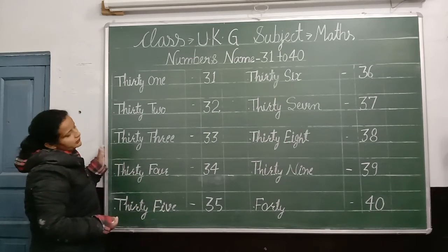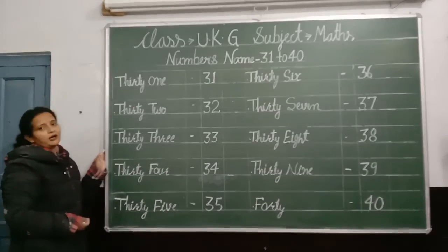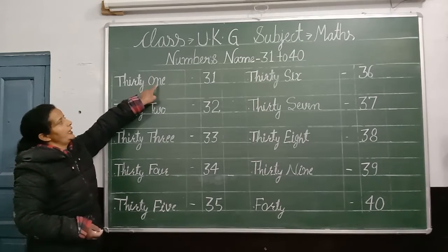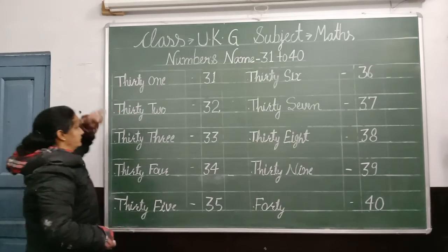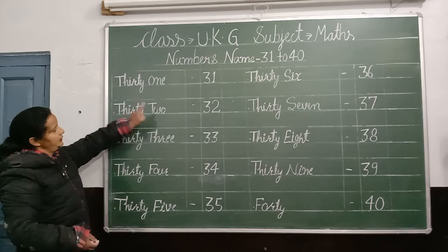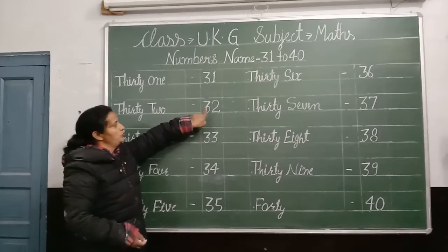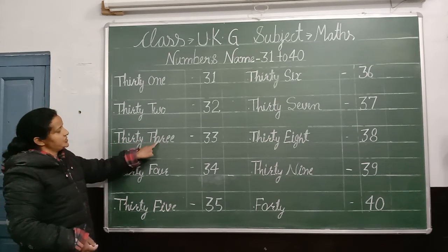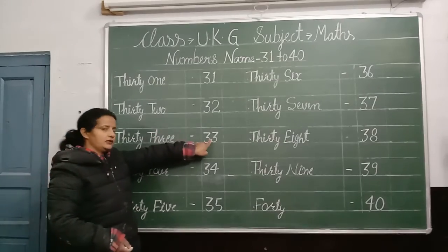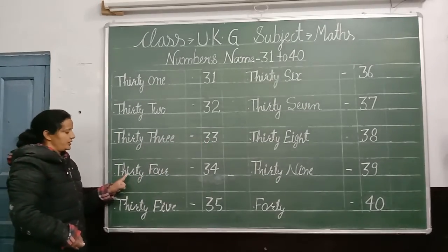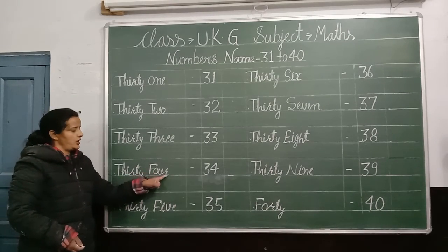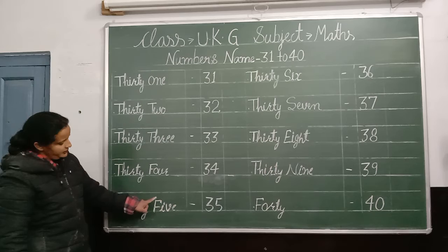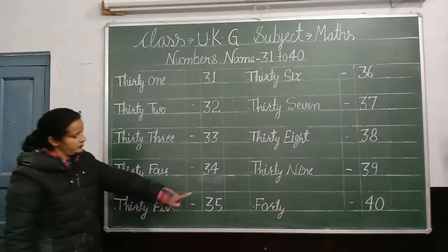Children, now let's revise thirty-one to forty, okay? T-H-I-R-T-Y O-N-E. Thirty-one. T-H-I-R-T-Y T-W-O. Two. Thirty-two. T-H-I-R-T-Y T-H-R-E-E. Three. Thirty-three. T-H-I-R-T-Y F-O-U-R. Four. Thirty-four. T-H-I-R-T-Y F-I-V-E. Five. Thirty-five.